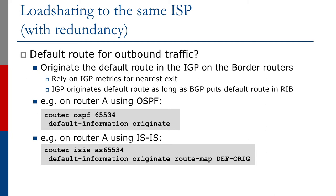What about the default route for outbound traffic? We can originate the default route in the IGP on the border routers and rely on IGP metrics for nearest exit. BGP will just have one best path, which means all traffic from the network will go one way. To better balance outbound traffic across the two links to the upstream provider, we originate the default route into our chosen IGP. The slide shows an example of how to do this in Cisco IOS using OSPF and IS-IS — we'll look at this in more detail later.